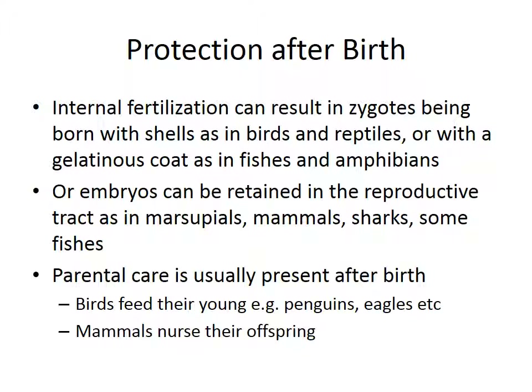Looking at protection after birth: internal fertilization can result in zygotes born with shells, as in birds or reptiles, or with a gelatinous coat as in fishes and amphibians whose eggs are coated with a sticky substance. Embryos can also be retained in the reproductive tract, as in marsupials like kangaroos, mammals, sharks, and some fishes, keeping the embryo inside until it's a little more developed before sending it out.